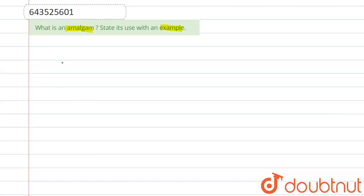If we talk about amalgam, amalgam is a mixture, or you can say it is an alloy of mercury with a number of metals such as sodium, zinc...